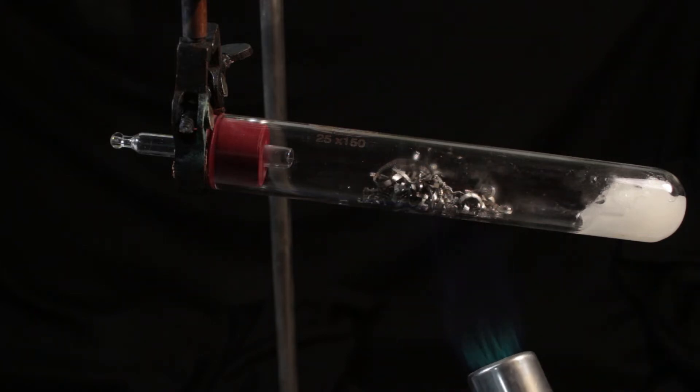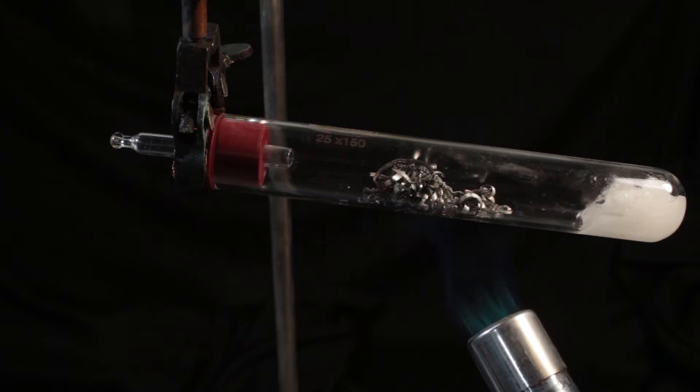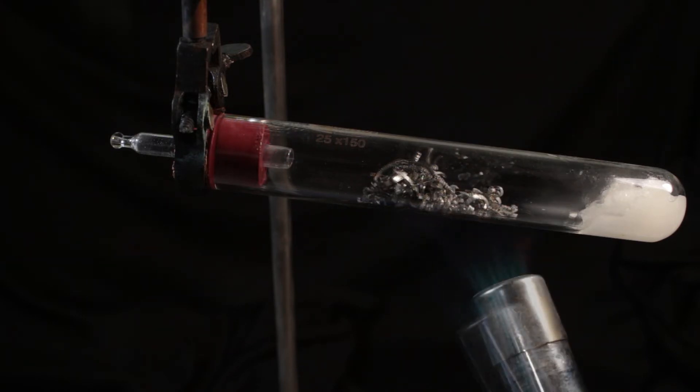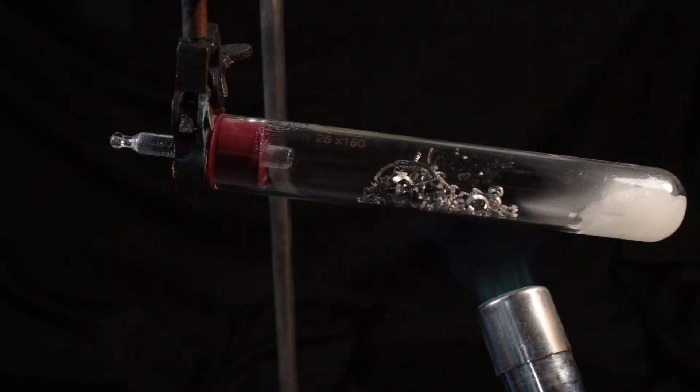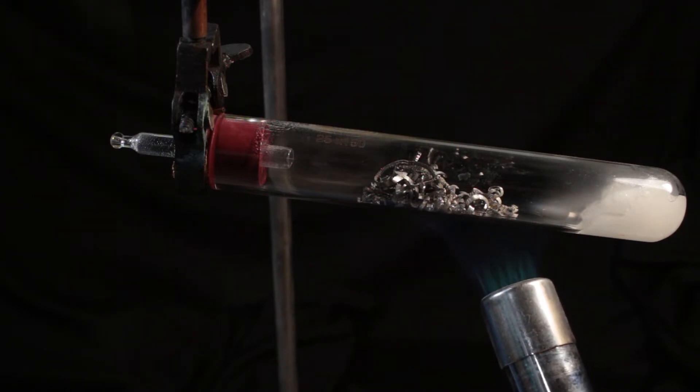Here I have cotton wool soaked with water and magnesium turnings in the middle of the test tube. I have to heat them up for quite a while. If I am careful with my heating of the cotton wool, it's not going to decompose. As soon as it remains wet, temperature never rises higher than 100 degrees.